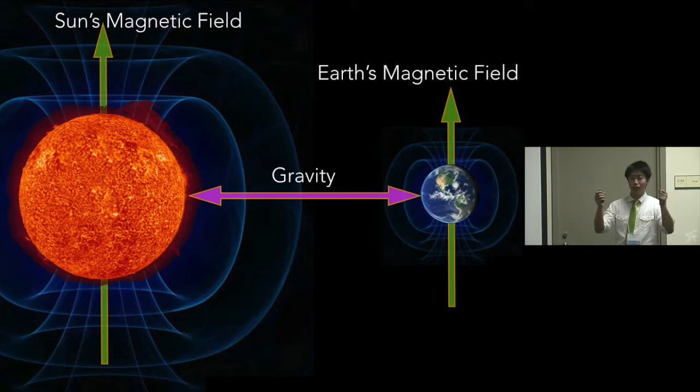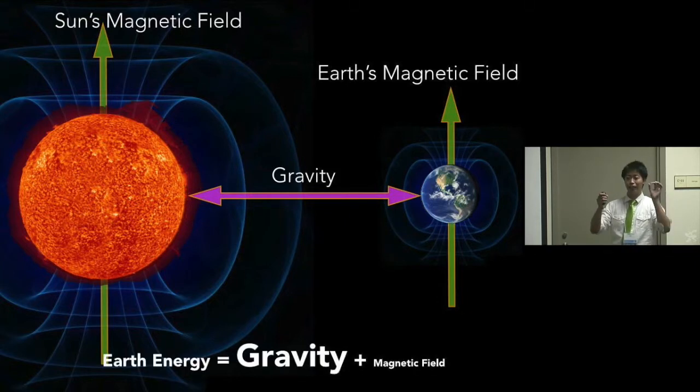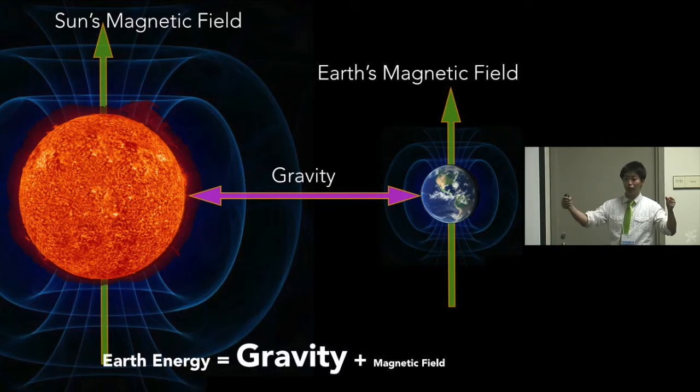And whenever you have two magnets, they repel away from each other. And it adds just the tiniest amount of energy to the Earth.